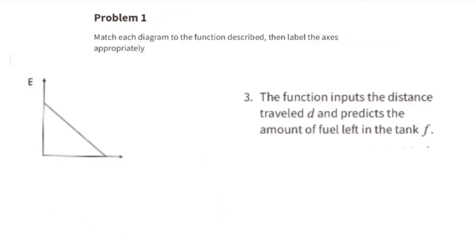Diagram E matches function 3. The function inputs the distance traveled, D, and predicts the amount of fuel left in the tank, F. The horizontal axis, or x-axis, represents distance, D, and the vertical axis, or y-axis, represents fuel, F. This graph shows that as the distance traveled increases, the amount of fuel left in the tank decreases.